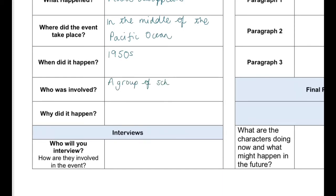The next W is 'who' — you need to write about who is involved. I've written in mine a group of schoolboys. The final W is 'why' — we don't really know why the plane crashed, but we do know that the boys were escaping atomic war.